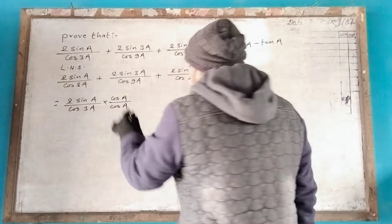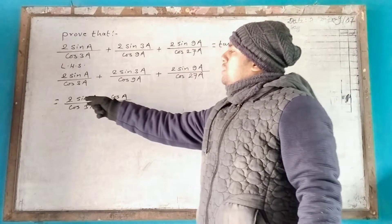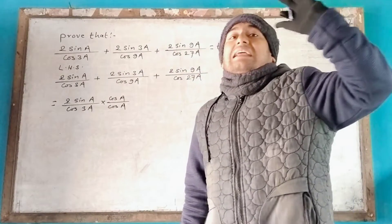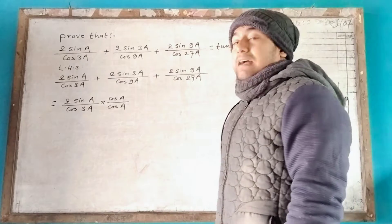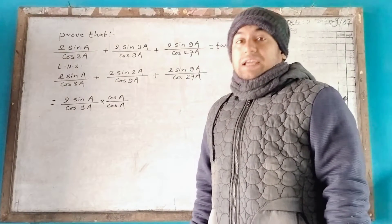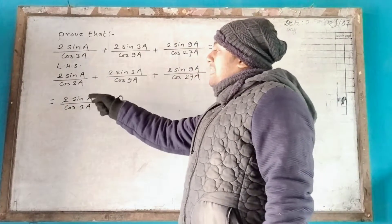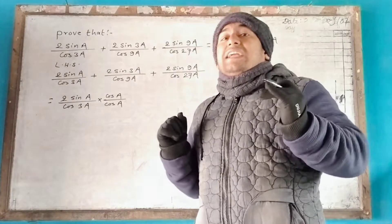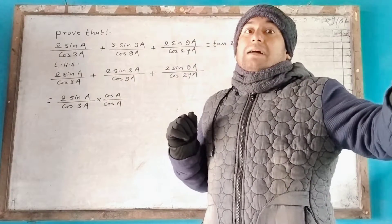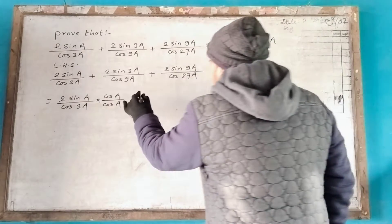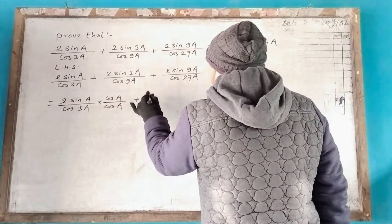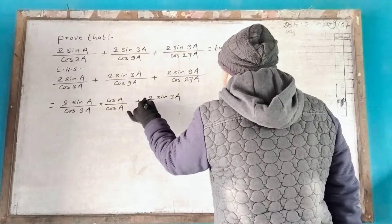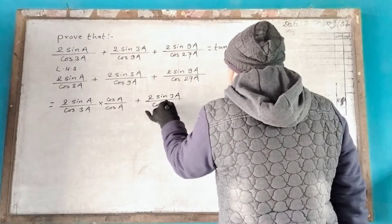The question is: 2 sin a into cos a, 2 sin a into cos a, sin 2a, 2 sin 3a divided by cos 9a.